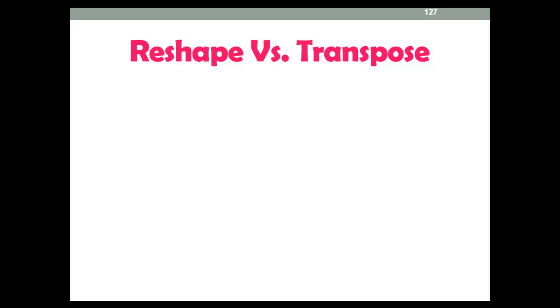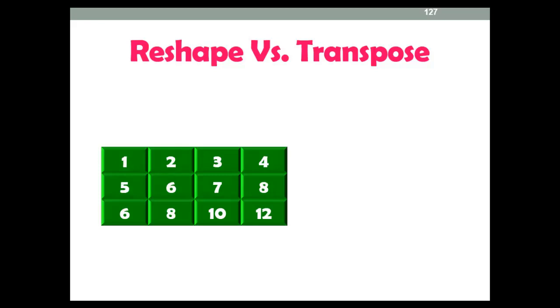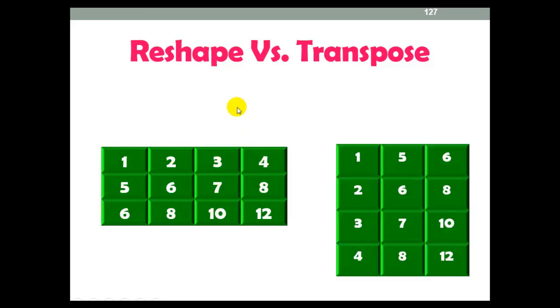As we're going towards machine learning, let's assume we have received data in table format: 1 plus 5 equals 6, 2 plus 6 equals 8, 3 plus 7 equals 10, 4 plus 8 equals 12, that we want to convert into this shape.